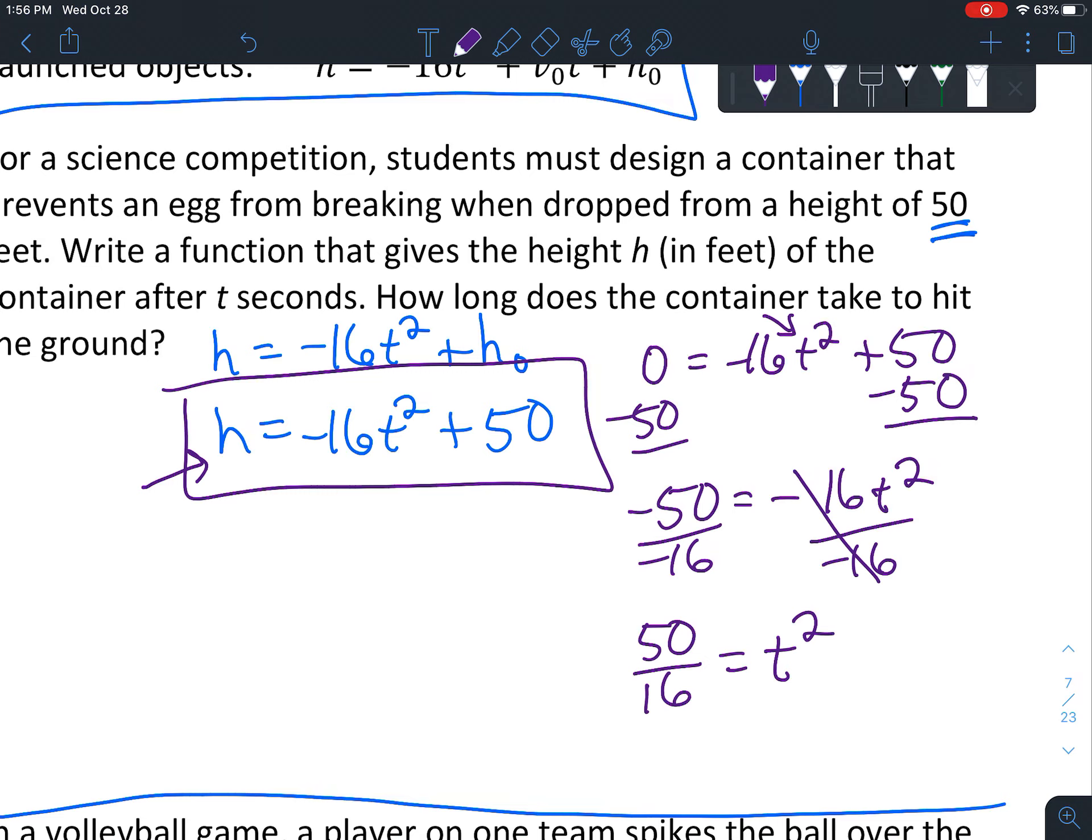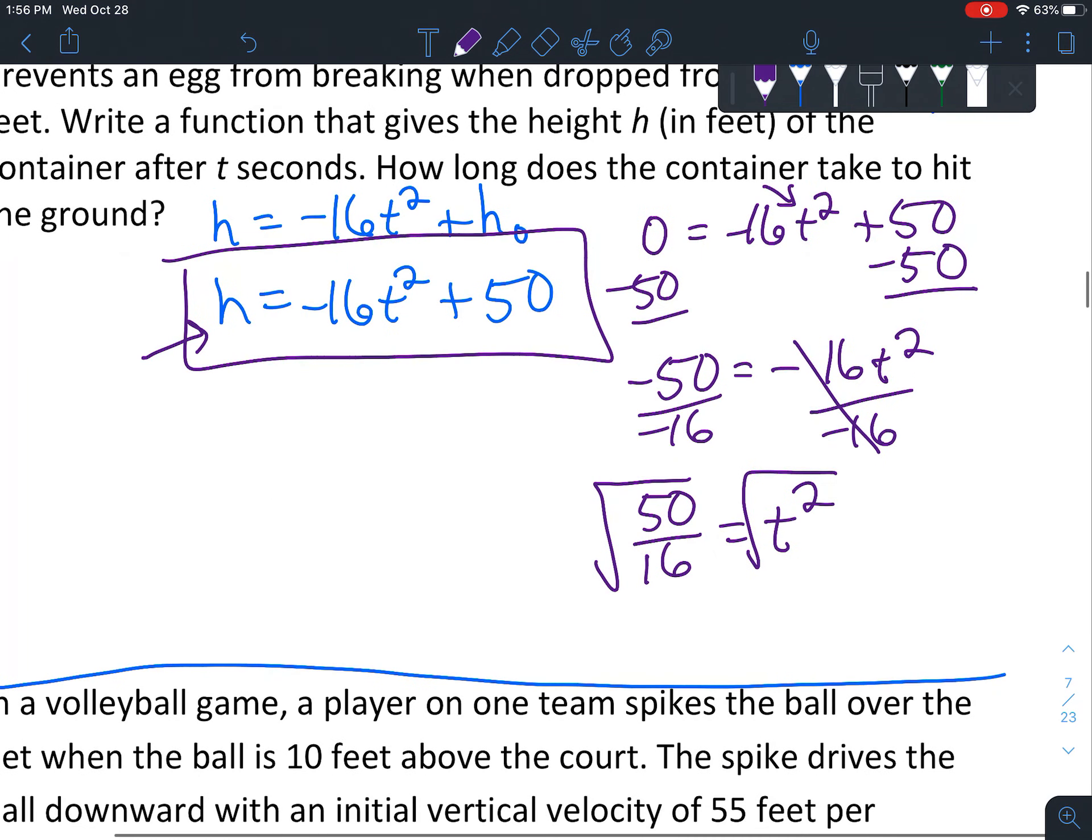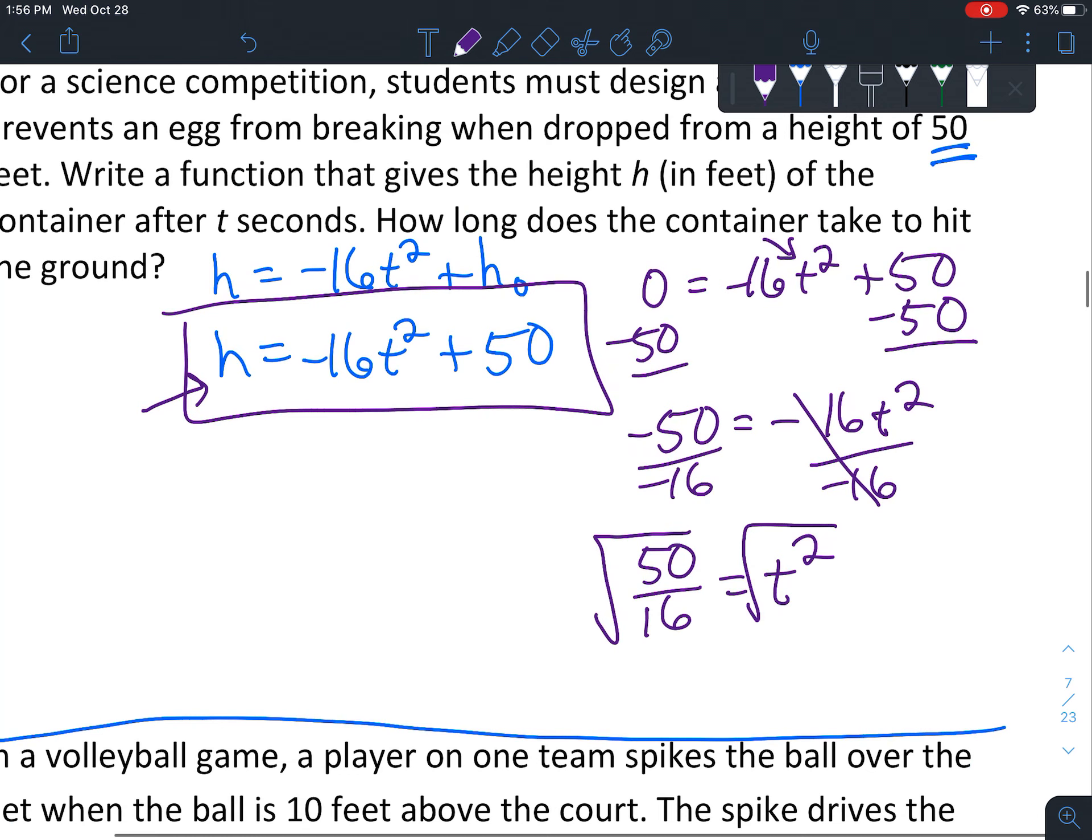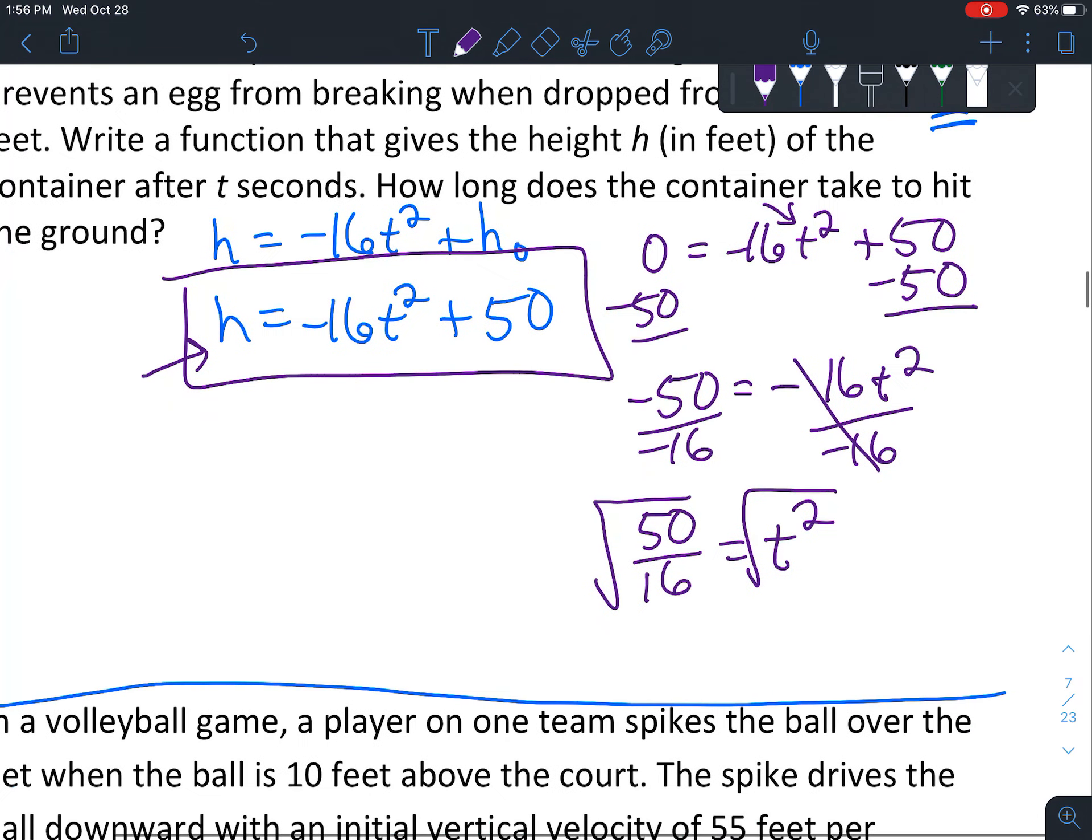Something got erased there. And now, take the square root of both sides. We could simplify the fraction, but there's not really a need to, and we know we're going to punch this into our calculator anyway. So go ahead and punch this into your calculator. 50 divided by 16, and you get 3.125.